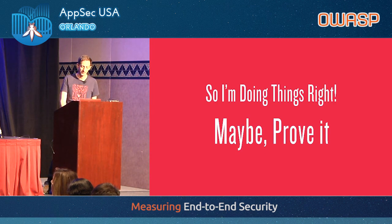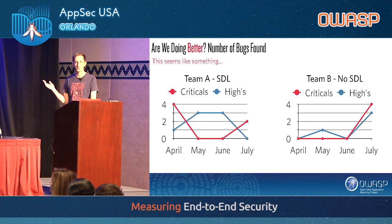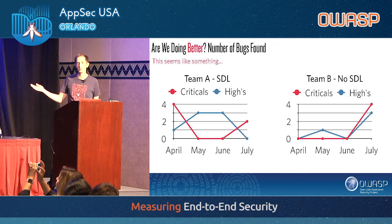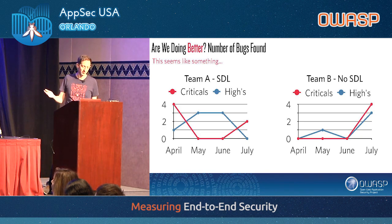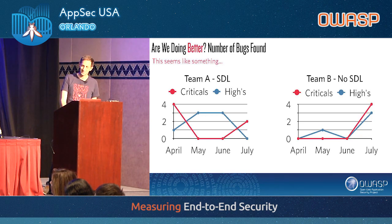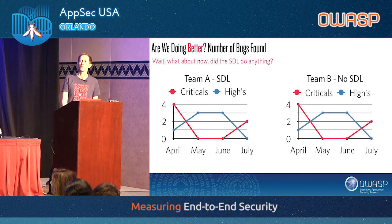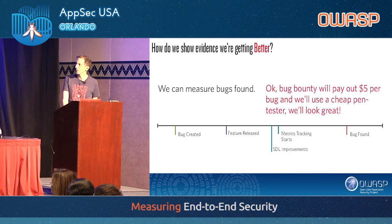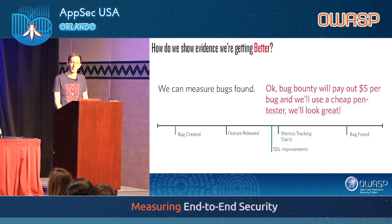We want to prove it. To illustrate this, consider two teams — one with an SDL and one without — and you chart bugs found over time. You could say team A is doing better because they're reducing bugs found, or team B is doing better because total criticals are actually smaller. What happens when both teams have the same number of bugs found? Is your SDL doing anything? How do you know? We want evidence that we're actually getting better.